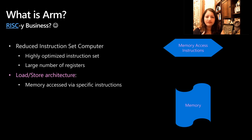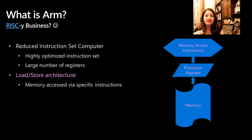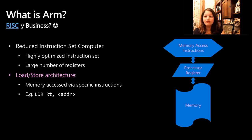An example would be: LDR, RT, and an address — where RT is an integer register. With that, let's move on to ARM64.